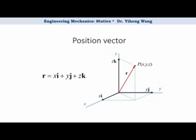then its position can be expressed by its position vector r, which starts from the origin and ends on point P. As a Cartesian vector, r can be expressed as xi plus yj plus zk.